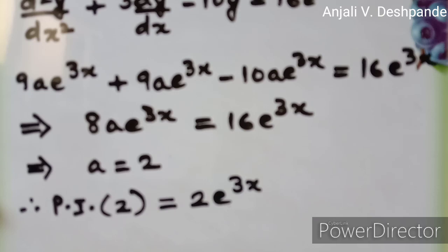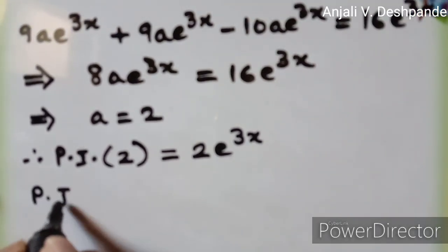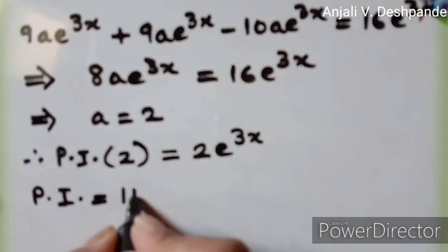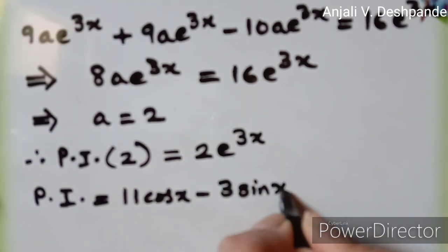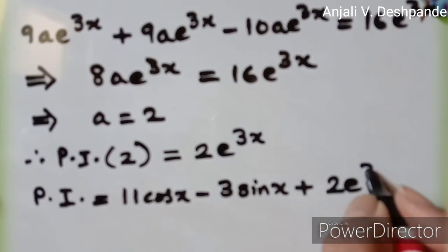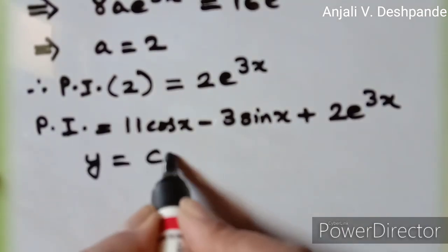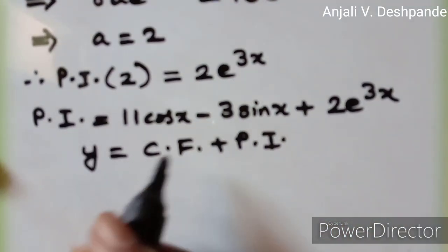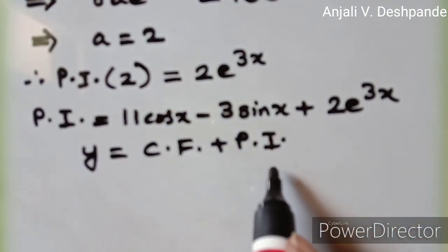Finally, we will combine the CF and the PI and then we are going to get the solution to the problem. The total PI is equal to 11 cos x minus 3 sin x plus 2e raised to 3x. The final solution y is equal to CF plus PI. You can check what the CF was, and combined with the PI, that is the solution to the problem.